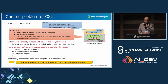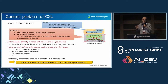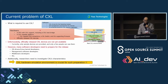The current problem with CXL is this: what is required to use CXL? Basically, both software and hardware are needed. For hardware, a CPU with CXL support including a CXL host bridge is necessary, along with a CXL-capable platform, a CXL-capable PCI Express connection, a CXL switch, and CXL support firmware.